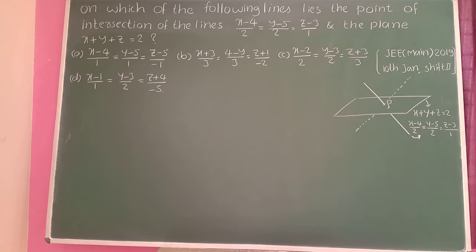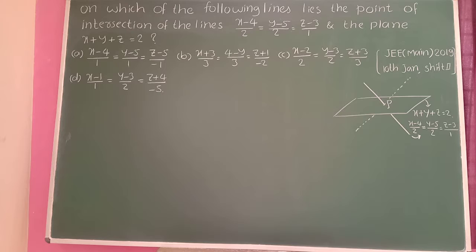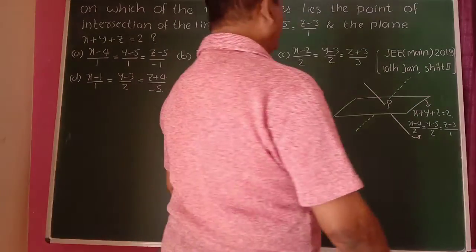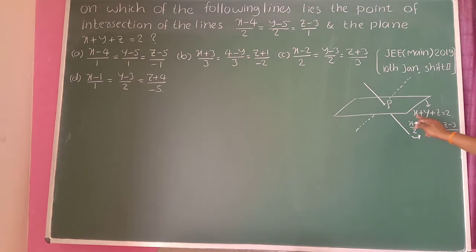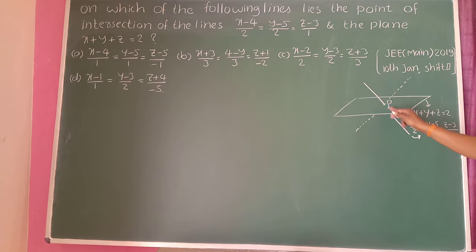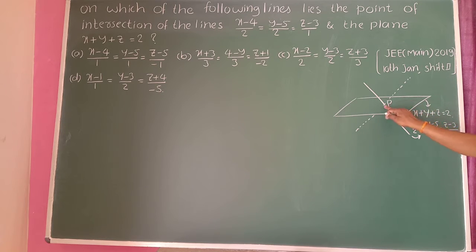Find the point of intersection of the line x minus 4 divided by 2 is equal to y minus 5 divided by 2 is equal to z minus 3 divided by 1, and the plane x plus y plus z equal to 1. This line intersects the plane at a point here.